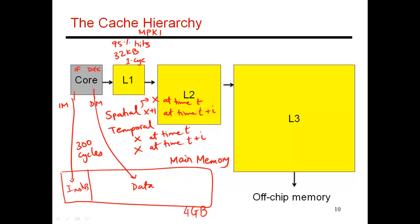So a 95% hit rate will result in a very small MPKI number.